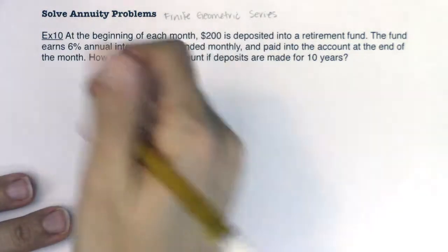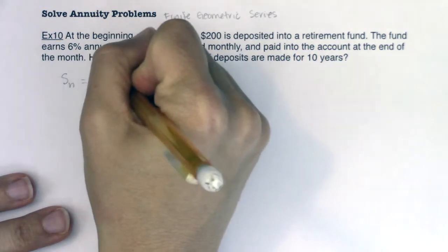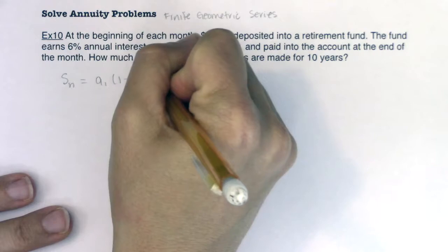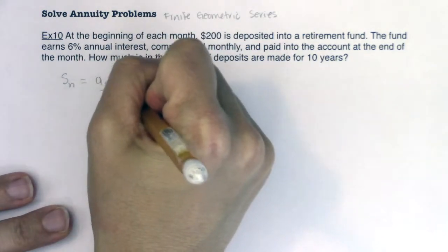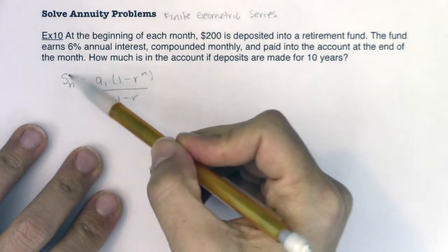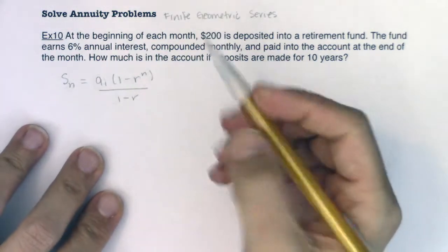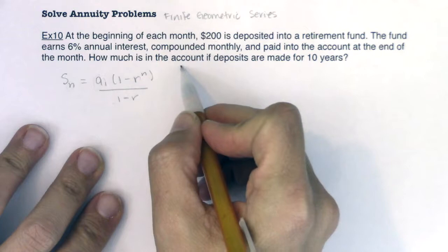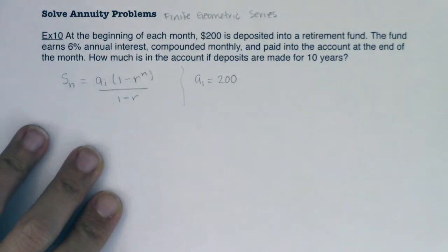For a finite geometric series, this is the formula: S_n equals a_1 times (1 minus r to the n) over (1 minus r). I need to know S_n, so I've got to figure out n, a_1, and r. Let's take a look at a_1. That's the easiest thing to spot. We know a_1 equals $200. That's how much I'm initially going to have in that savings account.